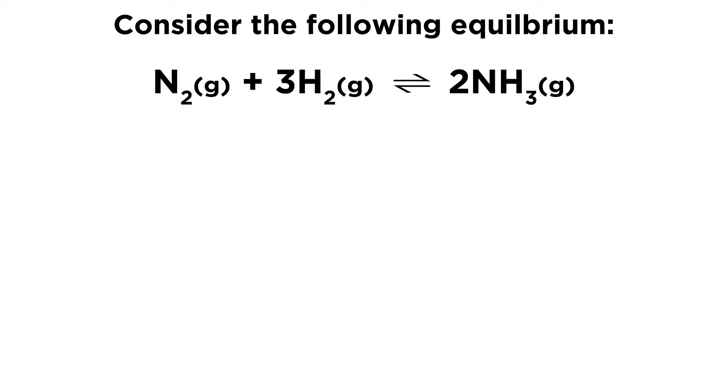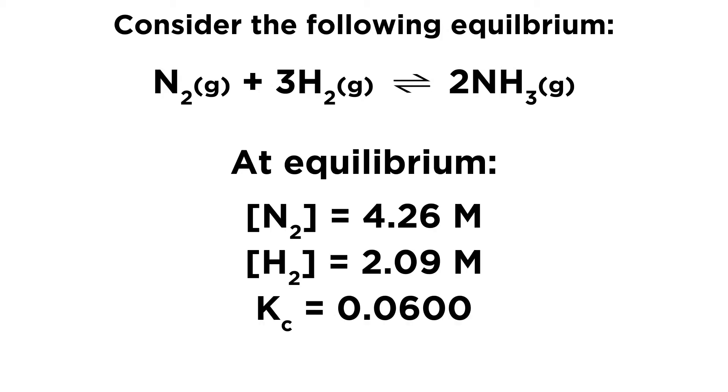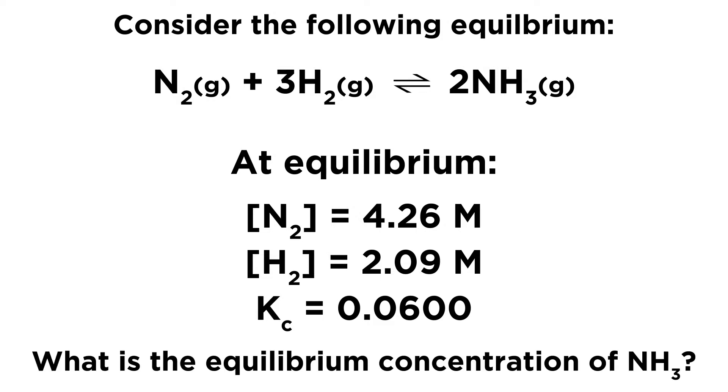Consider the following equilibrium with N2 plus 3H2 in equilibrium with 2NH3. Now at equilibrium, the nitrogen concentration is 4.26 molar, the hydrogen concentration is 2.09 molar, and the equilibrium constant for this system is 0.0600. What is the equilibrium concentration of NH3?